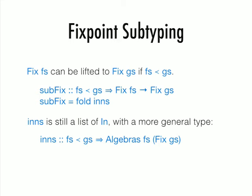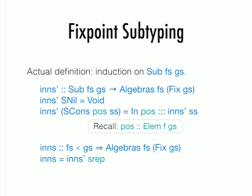If Fs is a sublist of Gs, then certainly a fixed point of Fs can be lifted to a fixed point of Gs, because it's the same tree, but now in the type we allow it to have more constructors. How do you do that? Simply by just fold Inns. But now this In is still a list of In, but now the type is more general. It's actually the Fs algebra whose carrier type is fixed point of Gs. Now the Inns actual definition is something like this. It's not in here, in there, here anymore. The position will be computed by this code which tries to find for each F where it is in Gs. With that you can lift data types.